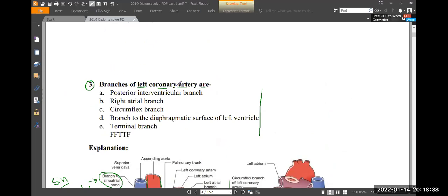So branches of the left coronary artery: first, posterior interventricular. This is also known as the PDA—posterior interventricular branch. Sorry, I mean, what's your interventricular branch? This is true.